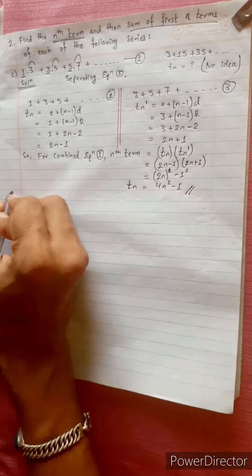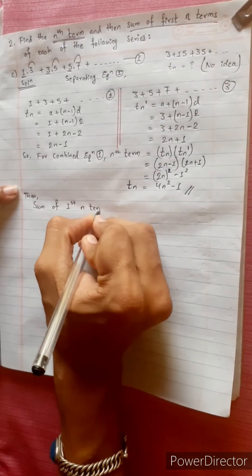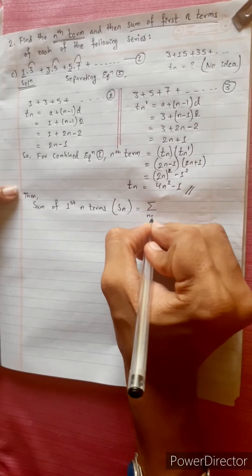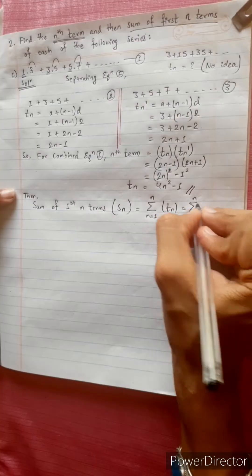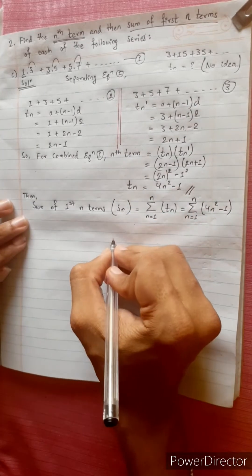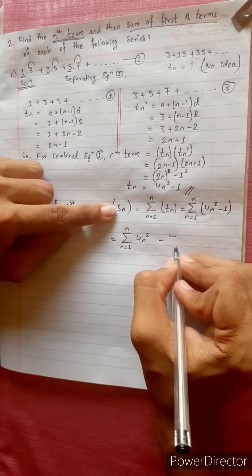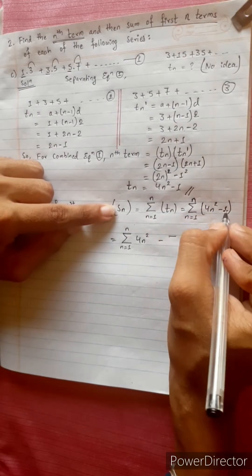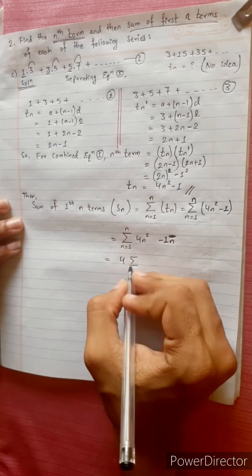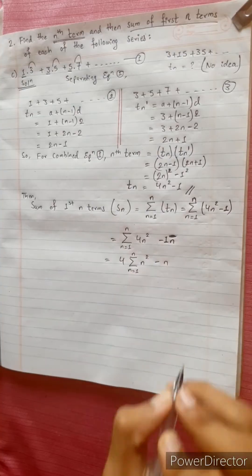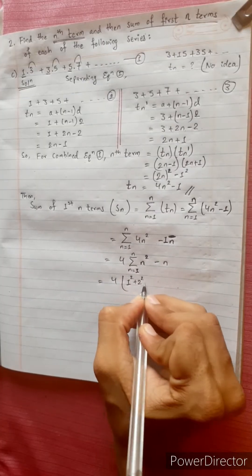This is the sum of first n terms. The sum of first n terms: using summation n equals 1 up to n, tn equals 4n squared minus 1. This is the summation from 1 up to n of 4n squared minus 1, equals 4 times the summation of n squared minus the summation of n.